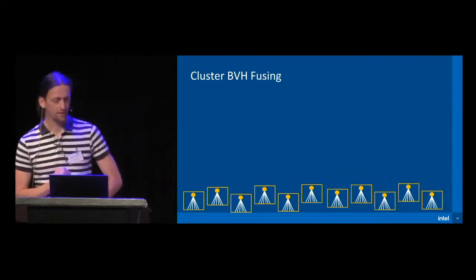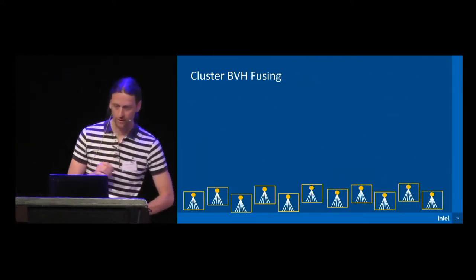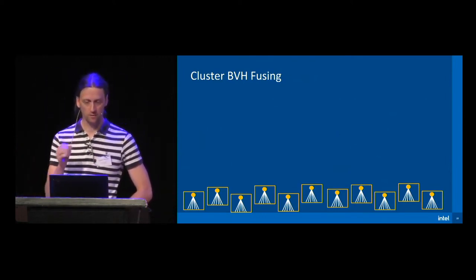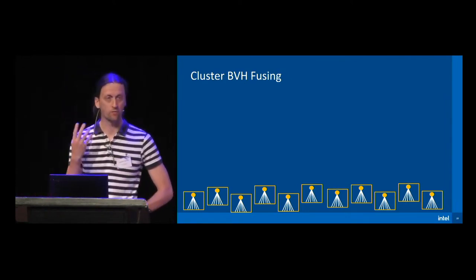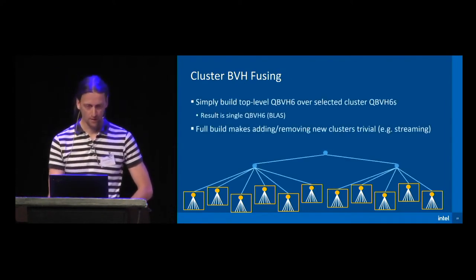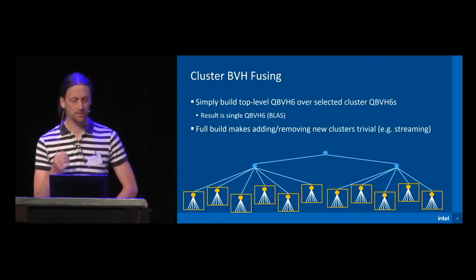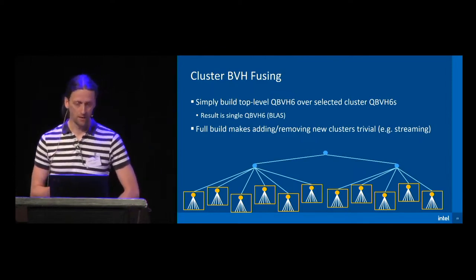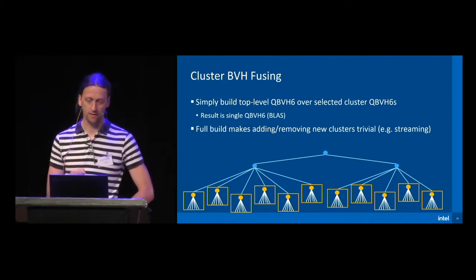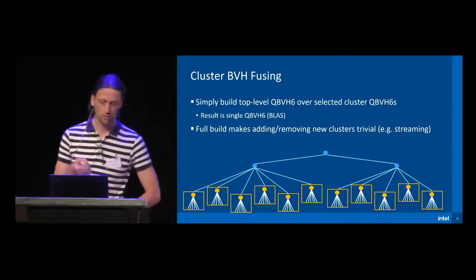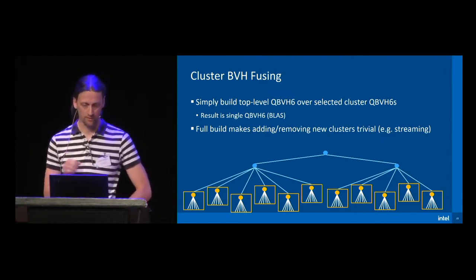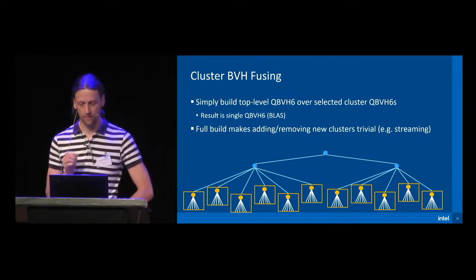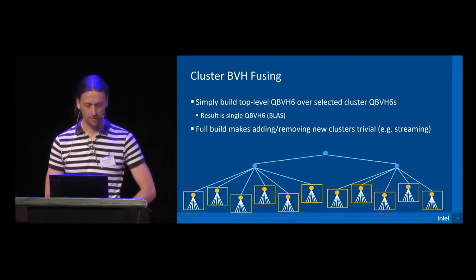This is the final phase of the per-frame GPU phase. We have all the cluster QVH6 structures in global memory and just need to connect them together — fuse them into a single QVH6. We simply build a top-level QVH6 over all the cluster QVH6 structures to connect them. The number of clusters is significantly less than the number of quads in the scene, so using a full BVH rebuild is a viable option here. A full BVH build also makes adding and removing clusters per frame — such as for streaming — very easy.